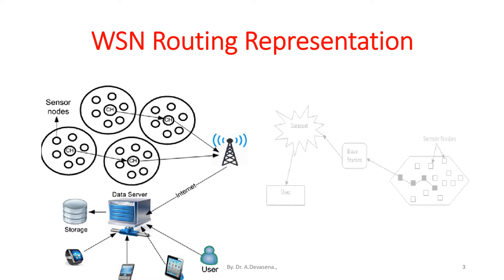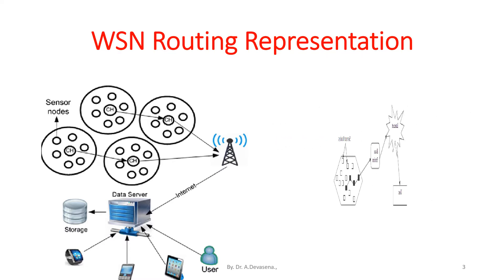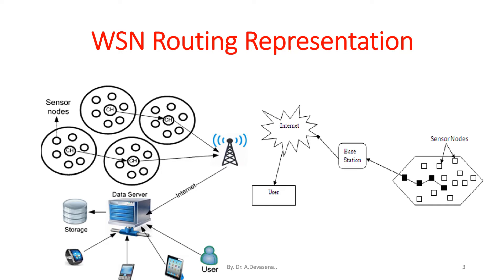Here is another representation of wireless sensor network routing. The sensor nodes collect the information. It is passed to the base station. From the base station, it is being passed to the user through the internet.